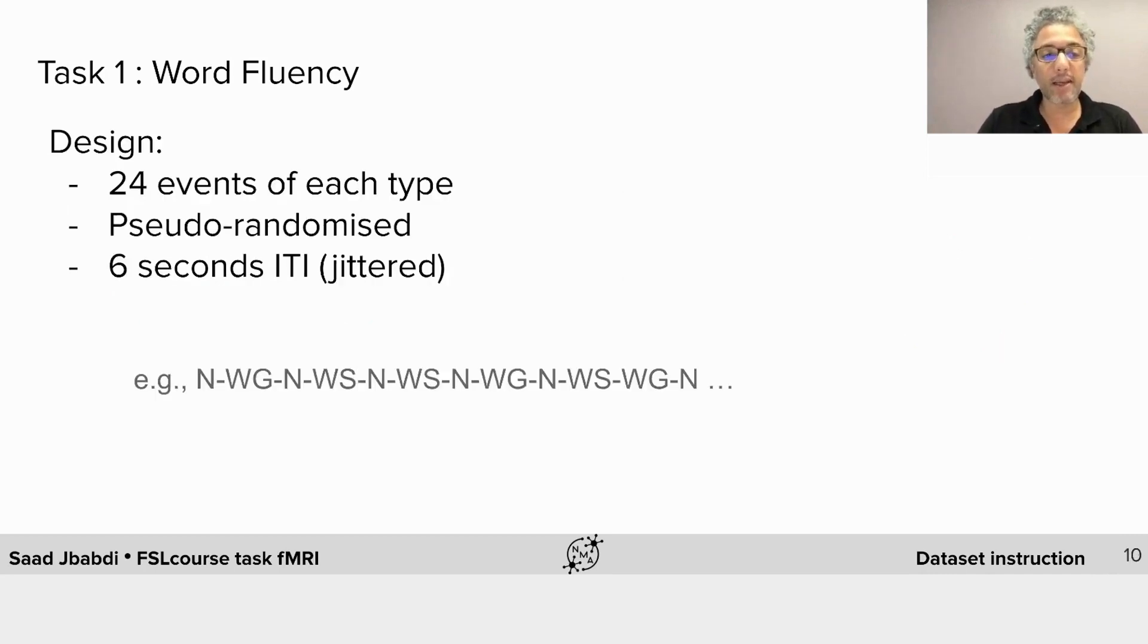Some more details on the task design. There are 24 events of each type. The order is pseudo-randomized and there is a six-second delay on average between consecutive events.